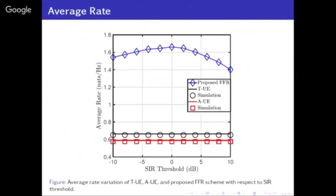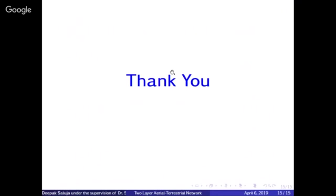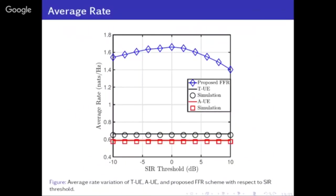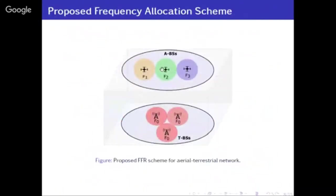The average rate of the proposed FFR is also much higher than both aerial and terrestrial scenarios. Comparing with FR1, the proposed FFR average rate is much higher. So basically, if you use aerial base stations for wireless communication, there must be some kind of frequency reuse — otherwise there will be a huge interference issue in the case of drones.